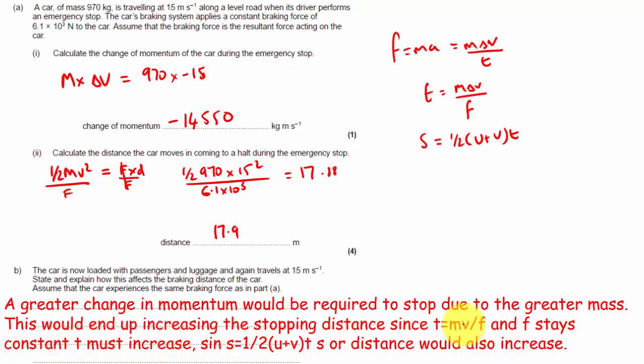So, if that stays the same size, this is larger, right, the value on top is larger. If this value is larger, and this stays the same size, this has to get bigger. If t gets larger, then since displacement equals a half u plus v times t, s, or distance, would also increase. So, both methods explain the same thing.